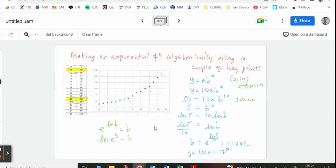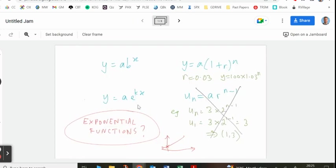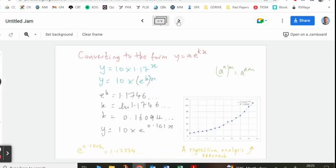Now we can link that back to this model as well. We can change it to this model by doing an easy little bit of mathematics here. So you can see that I've written y equals 10 times 1.17 to the x. And if I just bracket up e to the k there, then you can compare the two functions and see that 1.17 is equal to e to the k. So if we undo e to the power of by taking ln of both sides, we'll get k is equal to this.